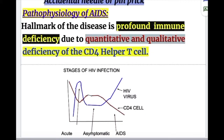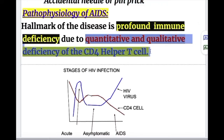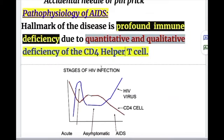Pathophysiology of Acquired Immunodeficiency Syndrome. The hallmark of AIDS is a profound immune deficiency due to quantitative and qualitative deficiency of CD4 helper cells.